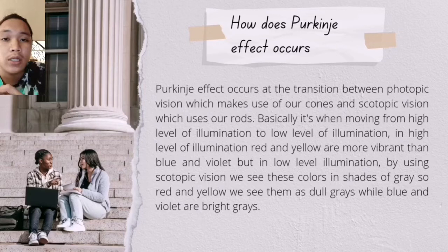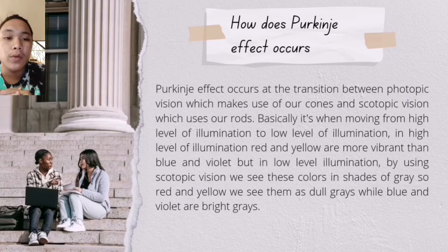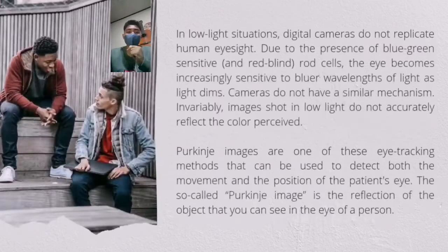The effect happens because the human eye's color-sensitive cones in the retina are most sensitive to green light, whereas rods do not determine colors and just respond best to green-blue light. This explains why we cannot see many colors at night other than blues and greens that our rods can recognize or sense.